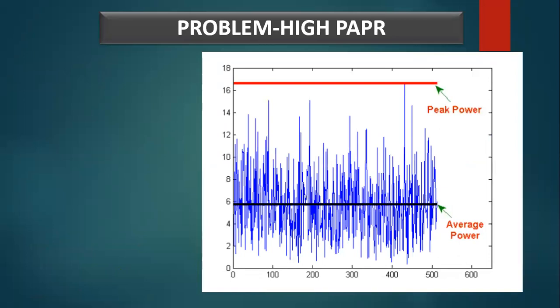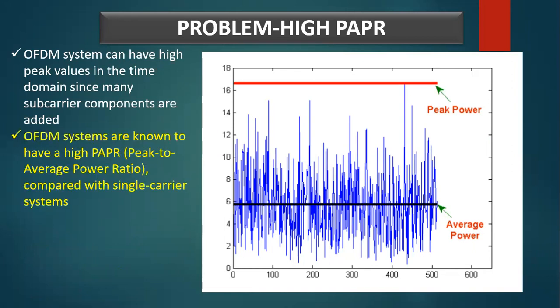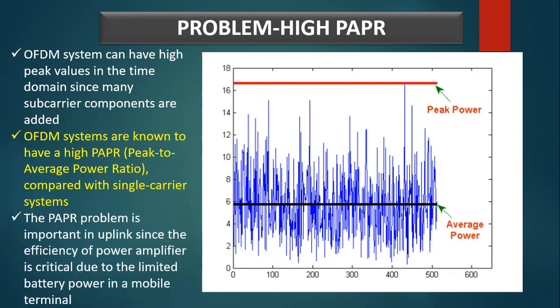One of the major disadvantages of OFDM is the high Peak-to-Average Power Ratio (PAPR). The OFDM system can have high peak values in the time domain since many subcarrier components are added via an IFFT operation. OFDM signal systems are known to have high PAPR compared with single carrier systems. The PAPR problem is particularly important in the uplink, since the efficiency of the power amplifier is critical due to the limited battery power in mobile terminals.